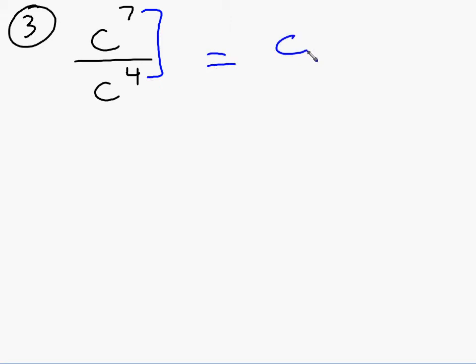But I need to ask you a question. Is that c to the 3rd on top or on bottom of the fraction? It's on top. Technically, this is c to the 3rd over 1. We wouldn't have to write it over 1, but you do need to see that because this power on top is bigger, the c to the 3rd stays on top.